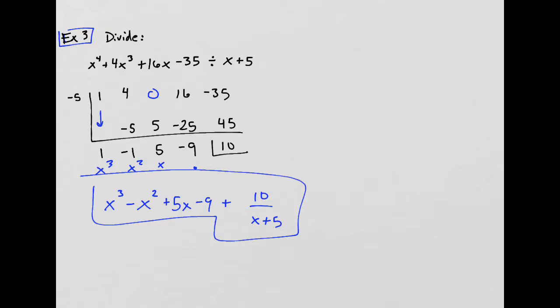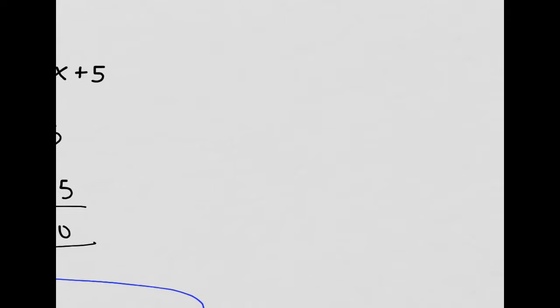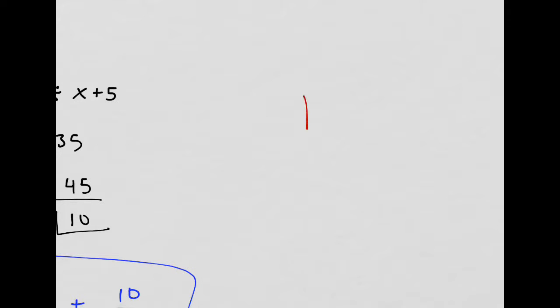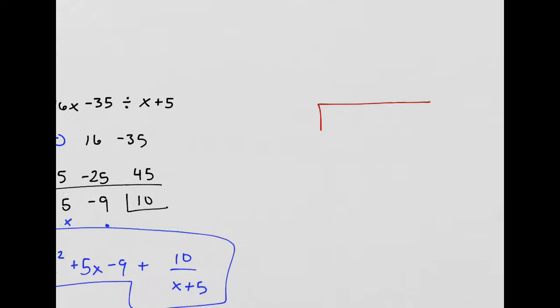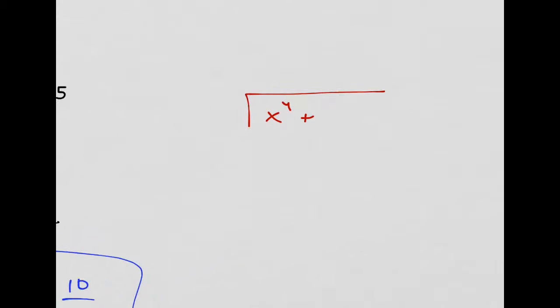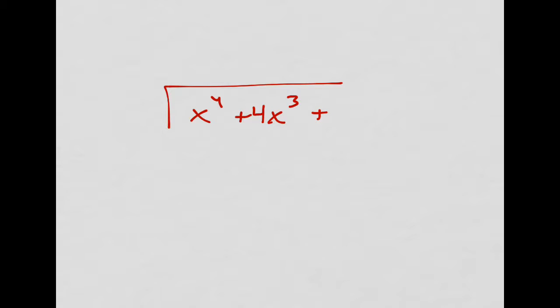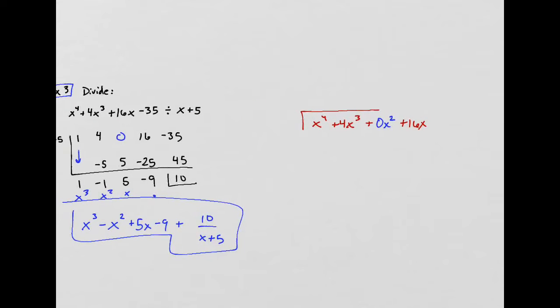All right. Now let's take a look with polynomial long division. I should get the same thing. I'm going to try and do it quickly, but hopefully I don't mess up. Okay. Well, first I write my dividend inside my little box over here. And I have to put in my x squared placeholder because I don't have an x squared there. So that's x to the fourth plus 4x cubed plus 0x squared and then plus 16x minus 35.